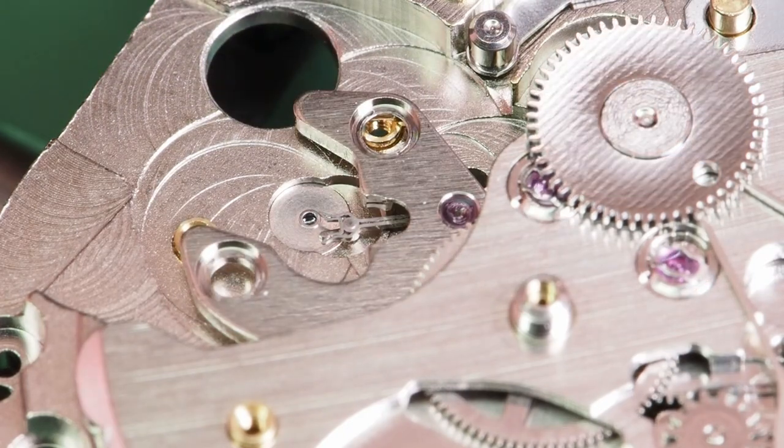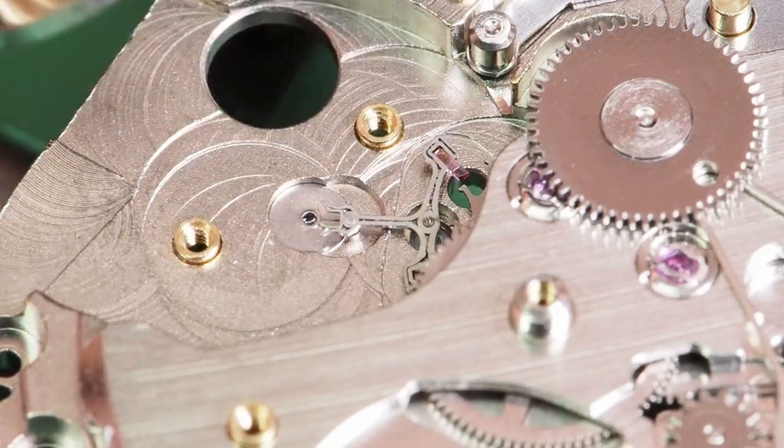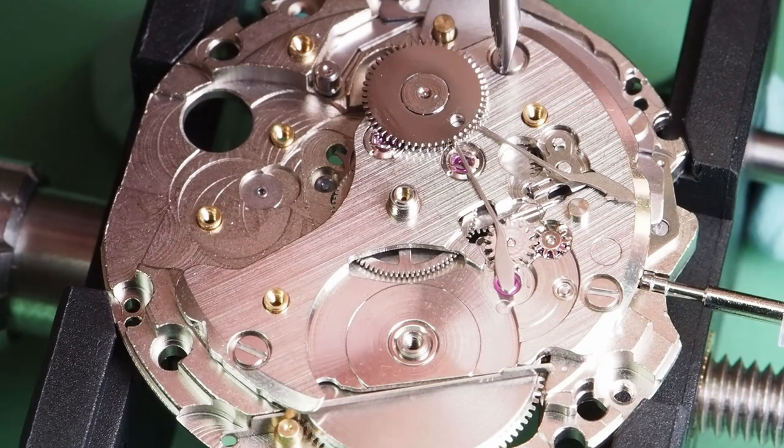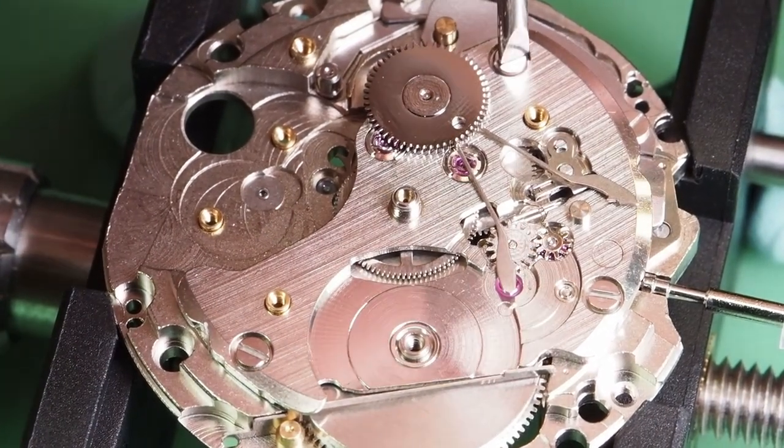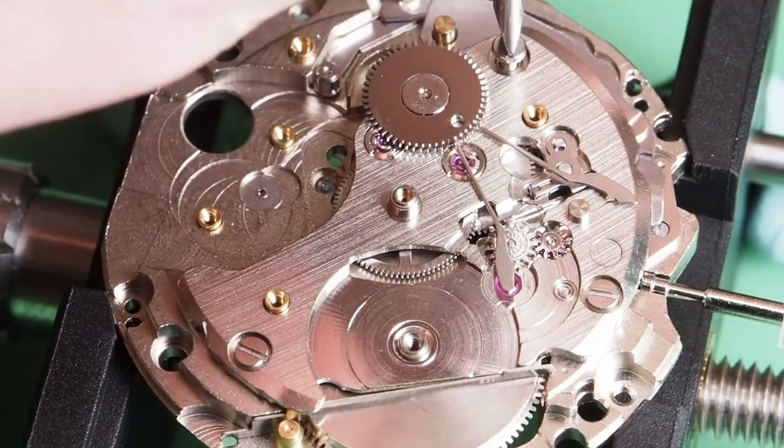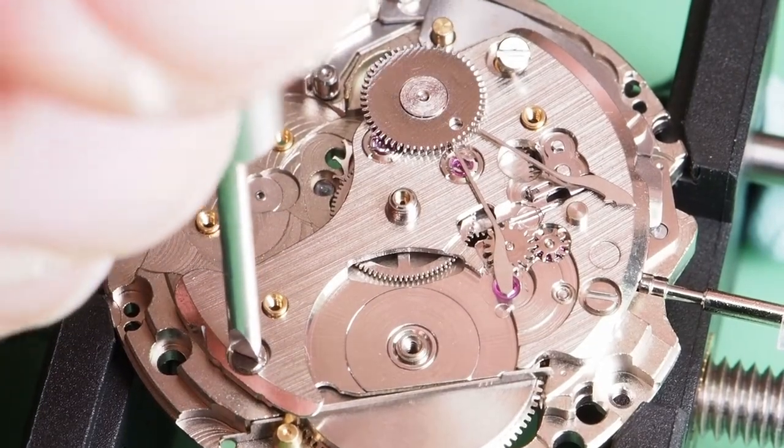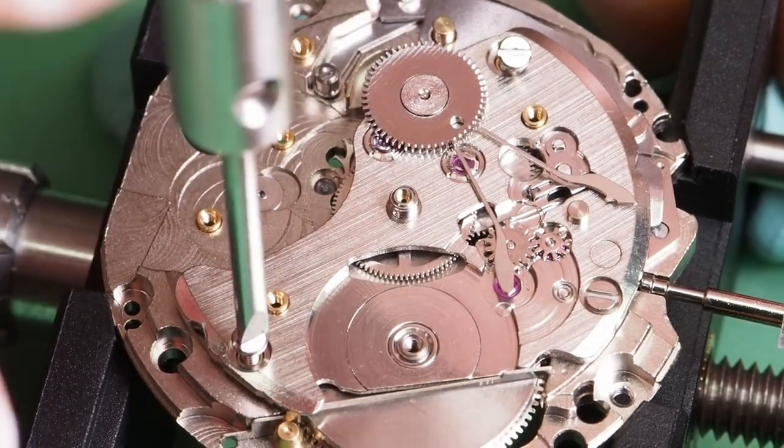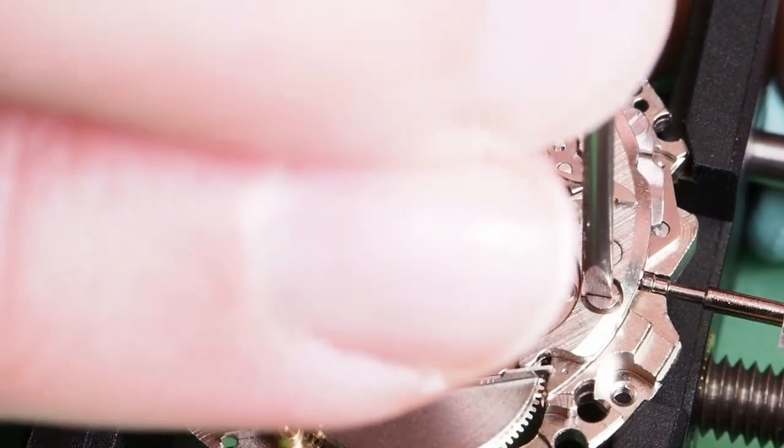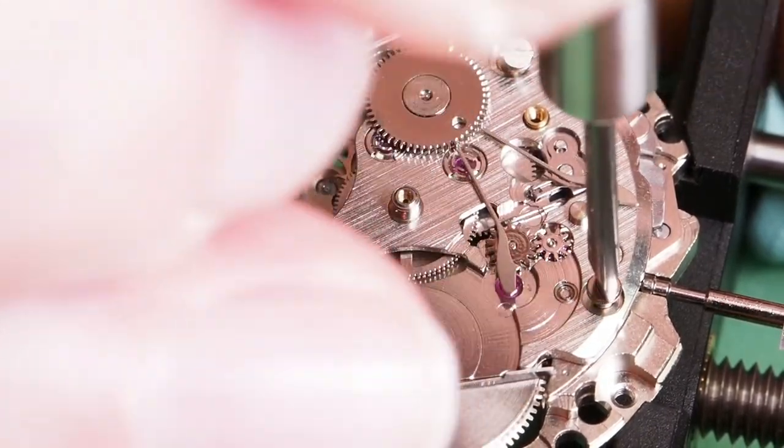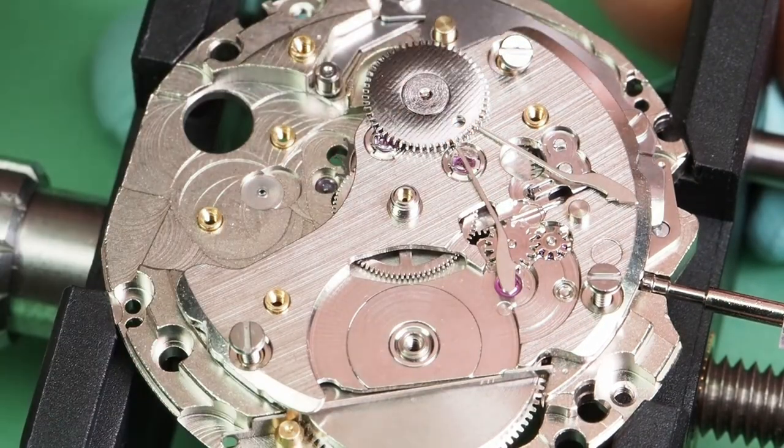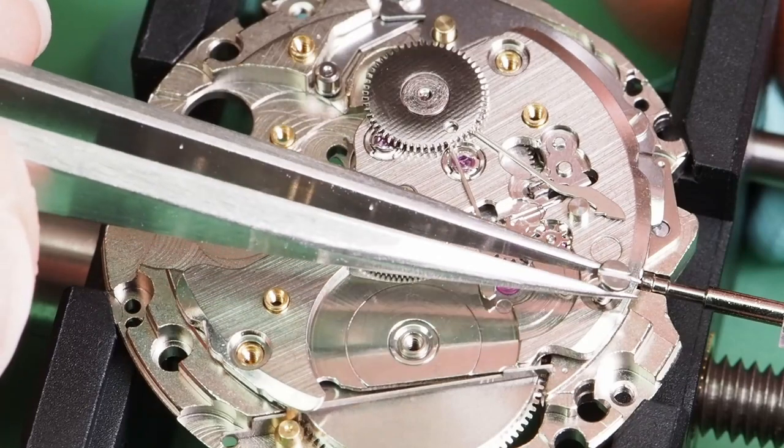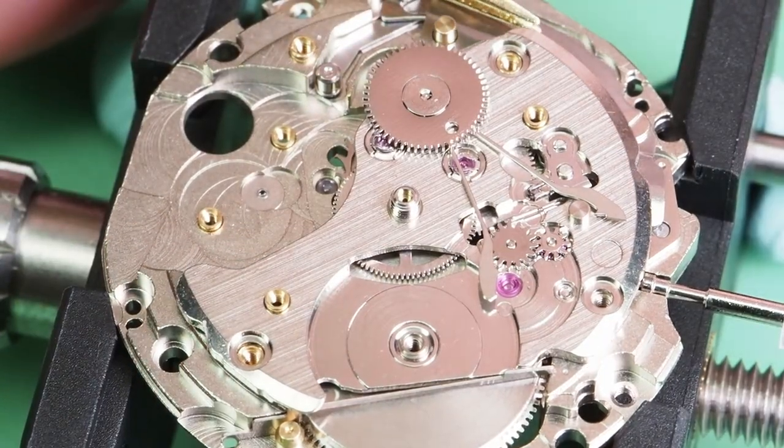The pivots on the pallet fork are very fine so I'm being very careful here and now I can lift the pallet fork. The barrel and train wheel bridge is secured in place with three screws they can now be removed. Now the screws have been removed, the bridge can be lifted away.